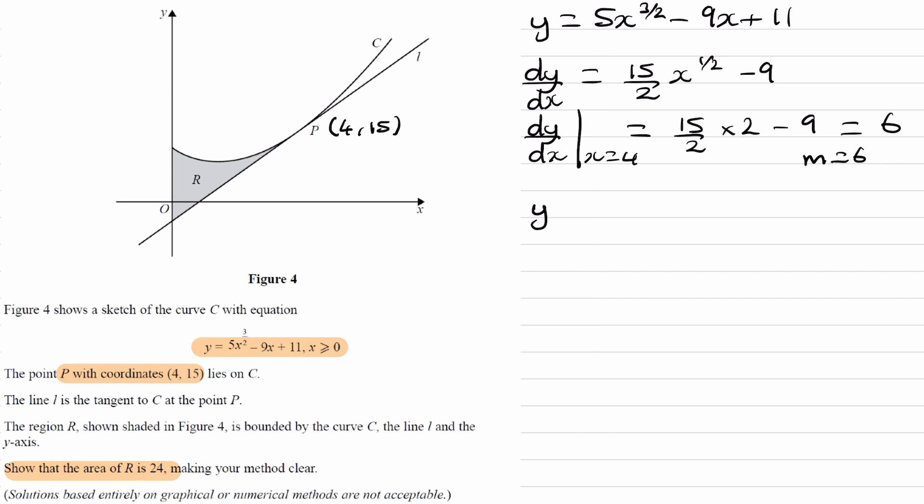We can then use the equation of a line: y minus y1 equals m times x minus x1. So y1 would be 15, gradient is 6, and x1 would be 4.